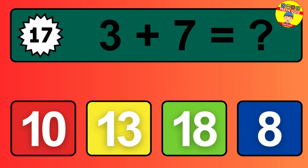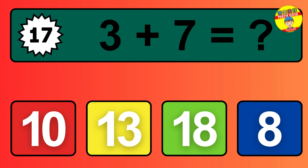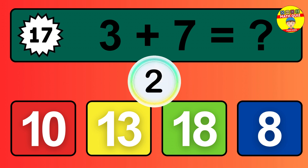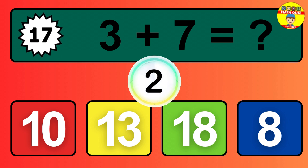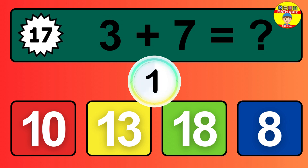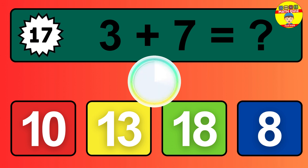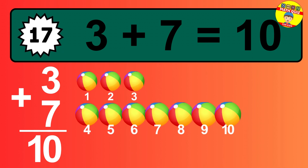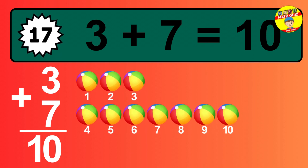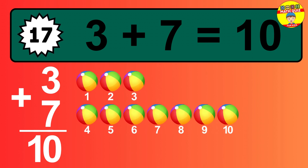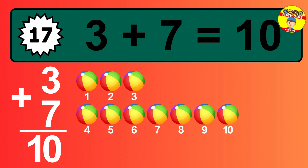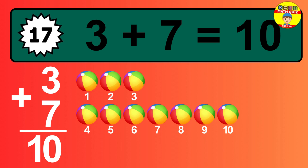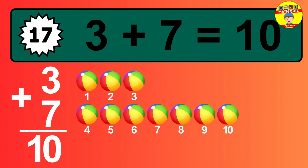Question 17. 3 plus 7 equals what? 3 plus 7 is 10. Let's count it. 1, 2, 3, 4, 5, 6, 7, 8, 9, 10.